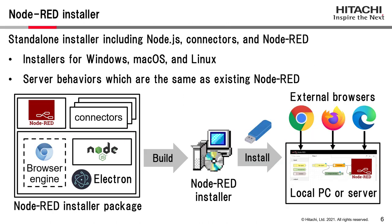This slide explains the Node-RED installer we developed. It is a standalone installer including Node.js, Node-RED connectors, and Node-RED, as shown in the bottom-left diagram. Installers are available for three operating systems. To remain consistent with the existing Node-RED, it behaves as a server. Therefore, the browser engine in Electron is not used currently. Instead, external browsers are used to access the Node-RED flow editor.